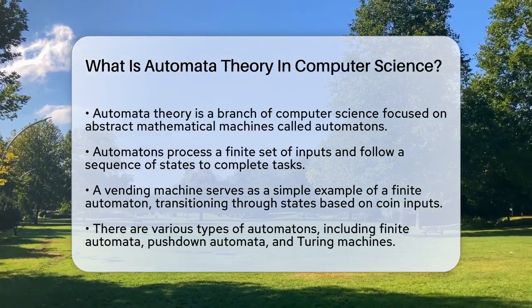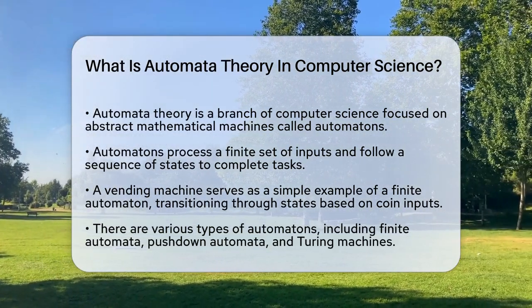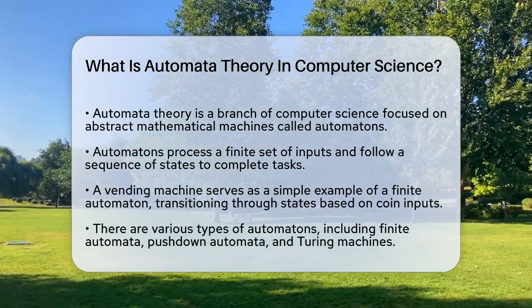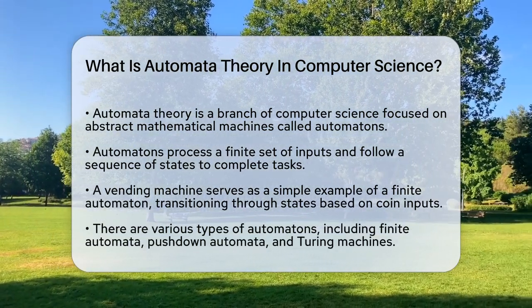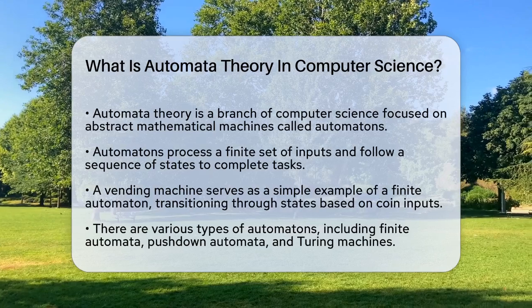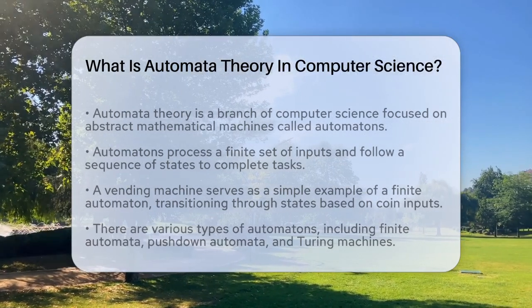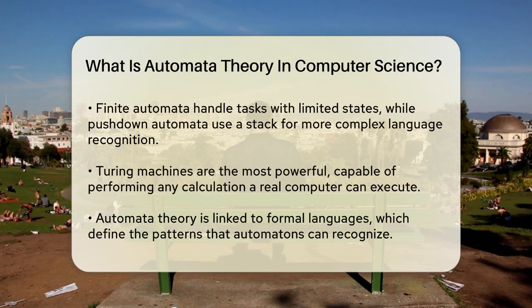Imagine a simple vending machine. When you insert coins, the machine goes through different states — like 0 cents, 5 cents, 10 cents — until it reaches the desired state, which is the exact change needed to dispense a soda. This vending machine can be modeled as a finite automaton, one of the simplest types of automatons.